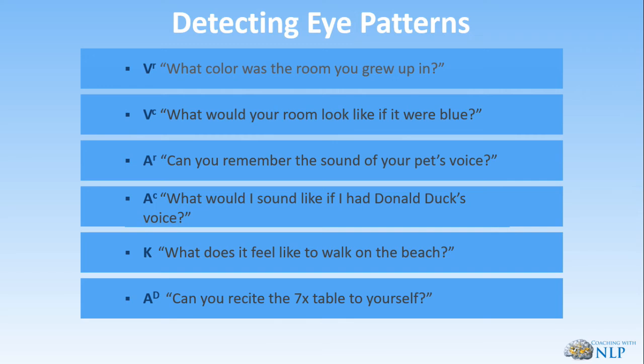When we elicit the eye patterns, we can actually sit in front of the client — this is one of those times where it's okay to do that. Normally we want to sit at 45 to 90 degrees from our client. We normally don't want to sit directly in front of them — it might feel confrontational, and when eliciting strategies like a deep love strategy, the client can actually attach that deep love to you. But with eye patterns, it's okay to sit in front because we need to do the tracking and see where the eyes actually move.